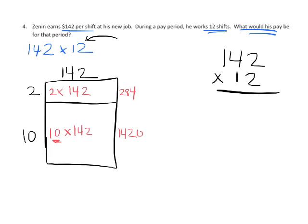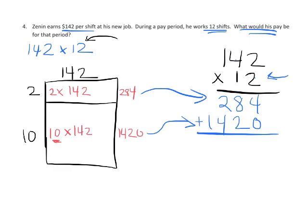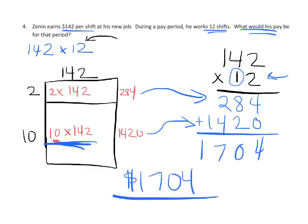How do we relate this to the standard algorithm? When we multiply by the 2, we get 284: 2 times 2 is 4, 2 times 4 is 8, 2 times 1 is 2. Then 1420 goes right here. When we multiply by the 1, it's not really a 1 — we're really multiplying by 10, so 10 times 142 is 1420. We add these together and get 1704, so Zenon earns $1,704.